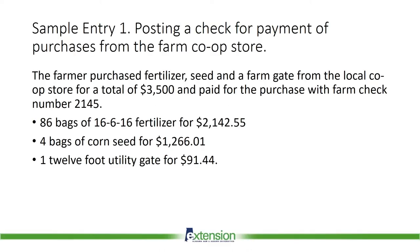Let's move into sample entry number one. Our first entry is a simple entry paying a bill from the local co-op store with a farm check. The farmer purchased fertilizer, seed, and a farm gate from a local co-op store for $3,500 and paid with farm check number 2145. That's 86 bags of fertilizer, four bags of corn seed, and one 12-foot gate. Remember, these are just sample made-up entries — the dollar amounts may not be correct for your farm. We are focused on understanding the process of keeping the books using QuickBooks.